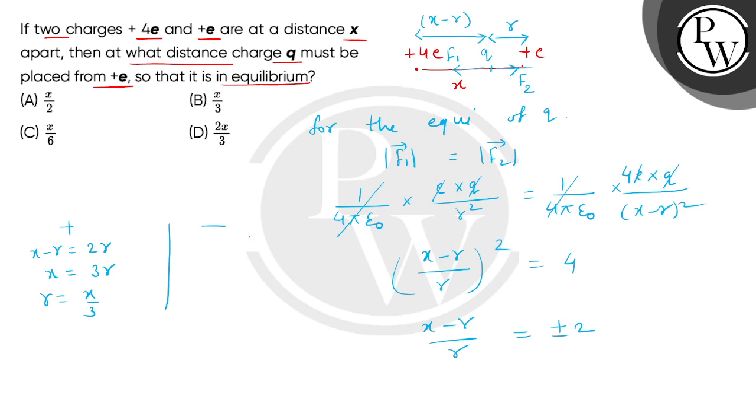Now if we select minus sign, then x minus r equals minus 2r. From this we find x equals minus r, so r equals minus x, which is invalid because we need the answer to be positive.